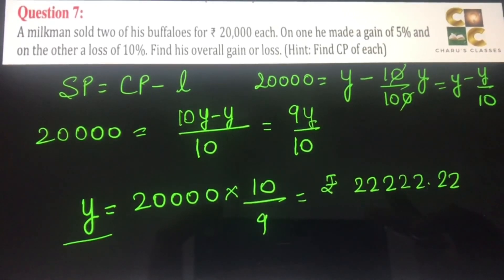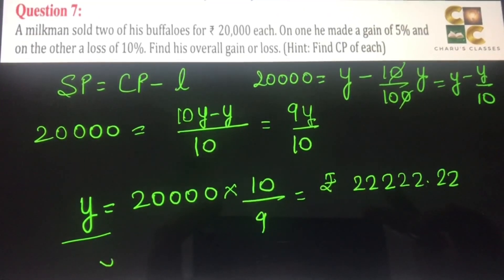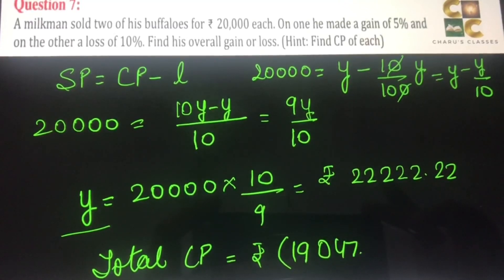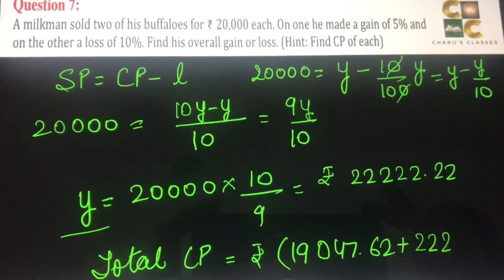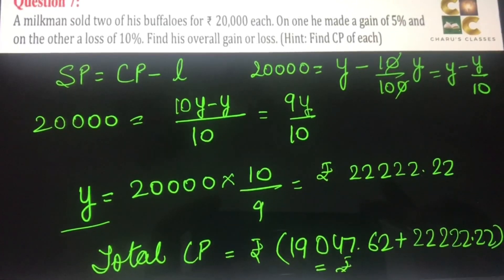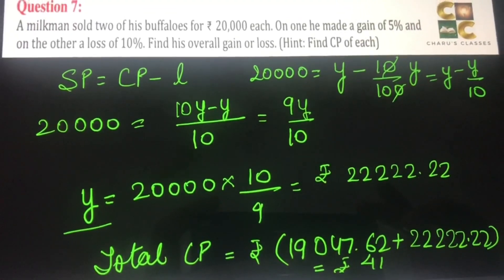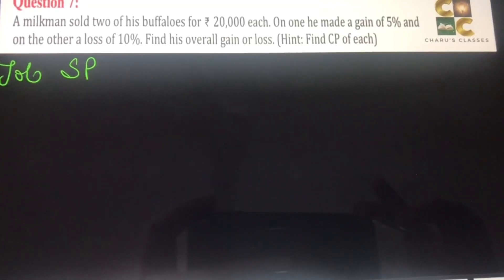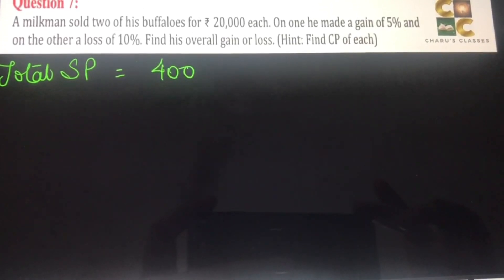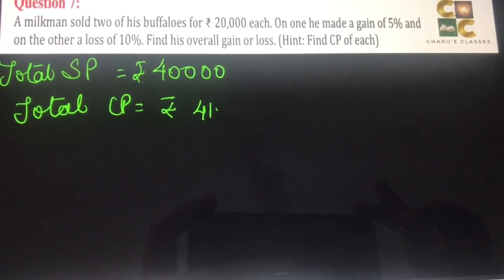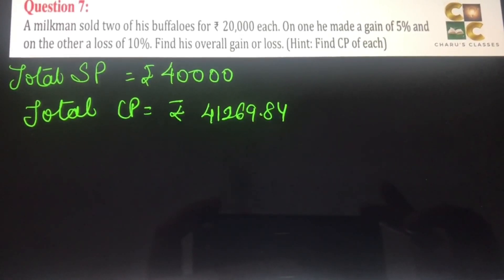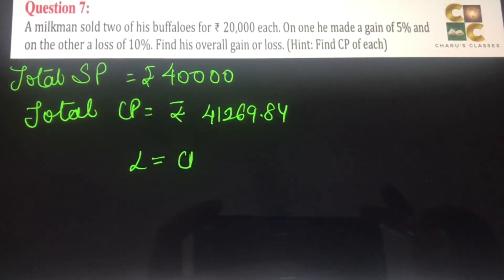We have the cost price of the first buffalo and second buffalo. So total CP is rupees 19,047.62 plus the second CP which is 22,222.22. If you solve this, our total CP is rupees 41,269.84. Our total SP was rupees 20,000 plus rupees 20,000, that is rupees 40,000. And total CP is rupees 41,269.84. So the cost price is more than the selling price, which means there is loss.